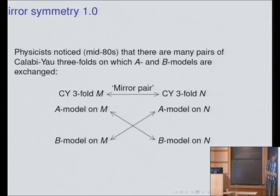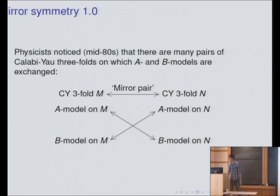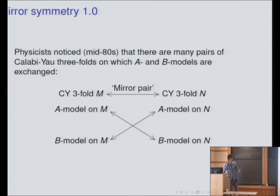You say that two Calabi-Yau threefolds are mirror if the A model on one is equivalent to the B model on the other and vice versa. Somehow mirror symmetry is this duality that swaps symplectic and complex invariants. It's not an easy question exactly what sort of structure these things are.